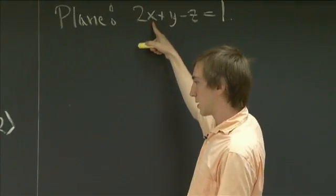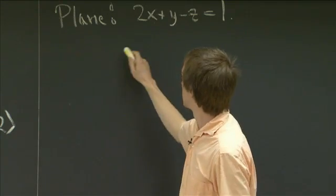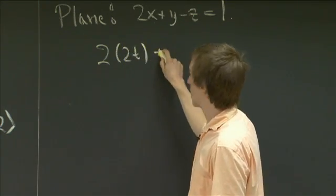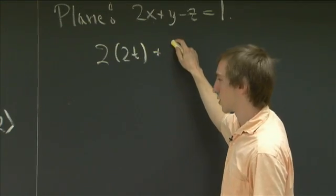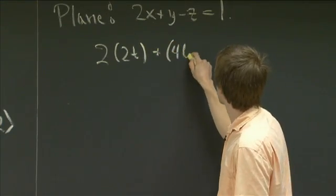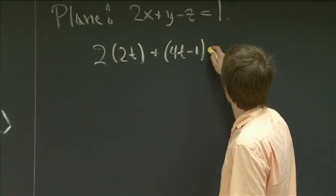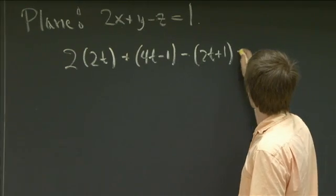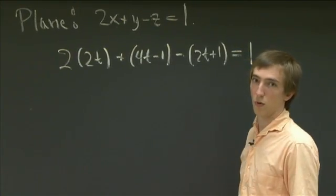And our plane was given to us by the equation 2x plus y minus z equals 1. So x on our line is 2T. So we have 2 times 2T plus y is 4T minus 1 minus z is 2T plus 1. And all of this is meant to equal 1.